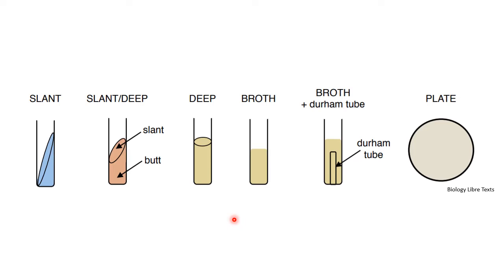Depending on our practicals or experiments, we use different types of media. Here I am not referring to selective or differential media, but rather slants, deeps, broth, or in biochemical tests where we detect gas production we use a Durham's tube in the broth, or agar plates. To preserve your culture, prepare slants; to see motility, use a deep inoculated with a straight needle; to observe turbidity, use broth; for gas production, use a Durham's tube; and for isolation and studying colony characteristics, use agar plates.